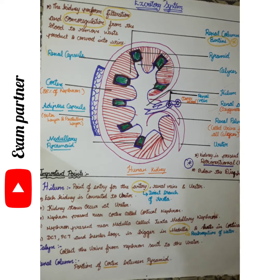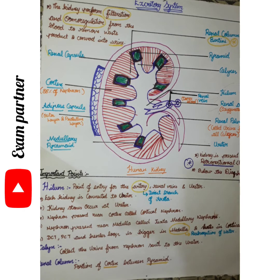One important MCQ question asked in NEET: where does a kidney stone form in the human kidney? If you consider where urine is stored during excretion, the answer is the urinary bladder. The stone formation occurs in the urinary bladder because that is where urine is stored.